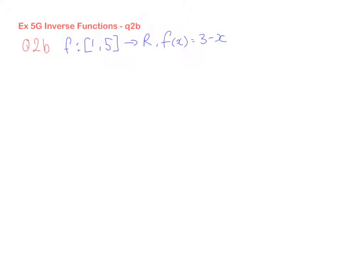Okay, so let's have a look at 2b. We've got f such that the restricted domain is only between 1 and 5, that maps on the real number plane, for f of x equals 3 minus x. So once again, this is just a straight line, however, this part plays a major role.